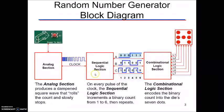It's then going to go into sequential logic. So on every pulse of the clock, every one of these square waves, the sequential logic section increments a binary count from one to six and then repeats. So coming out of our sequential logic section we have an output A, output B, and output C.